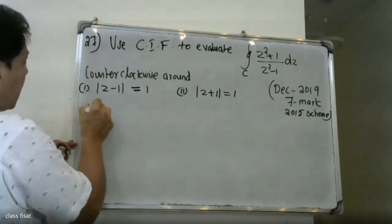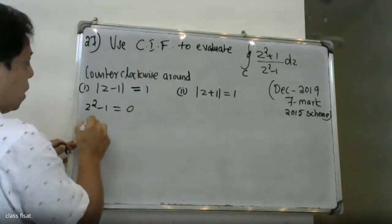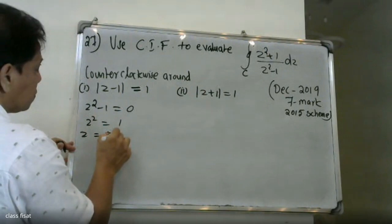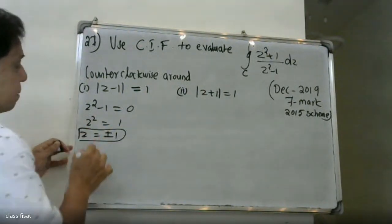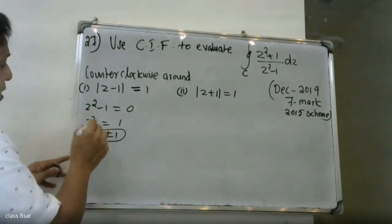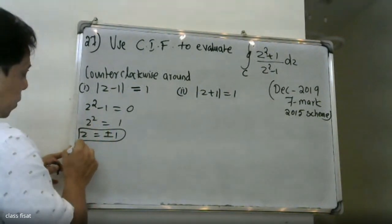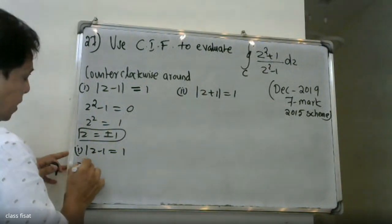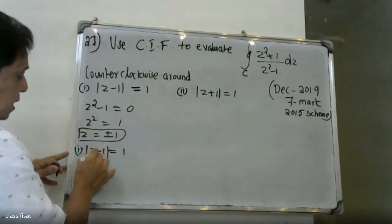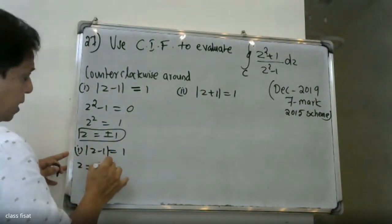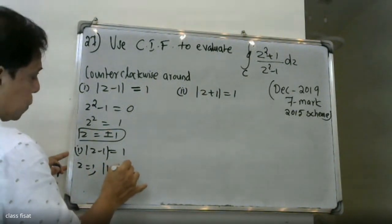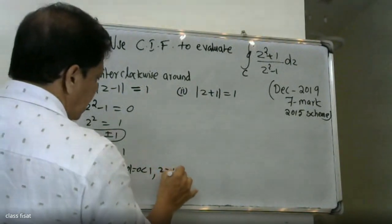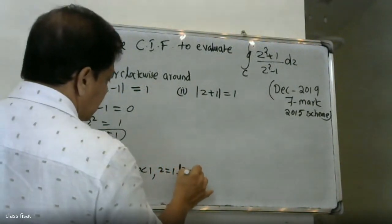The singular points are z² - 1 = 0, so z = ±1. For the first region, we check |z - 1|: substituting z = 1, |1 - 1| = 0, which is less than 1. Therefore z = 1 lies inside the contour C.